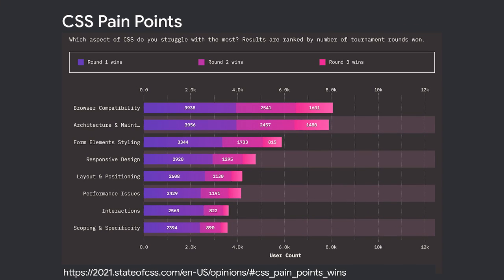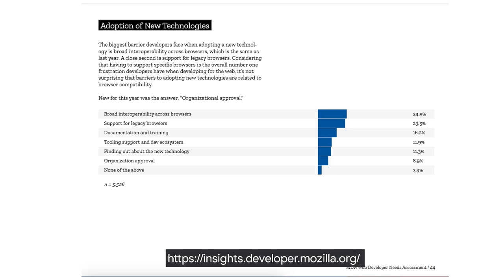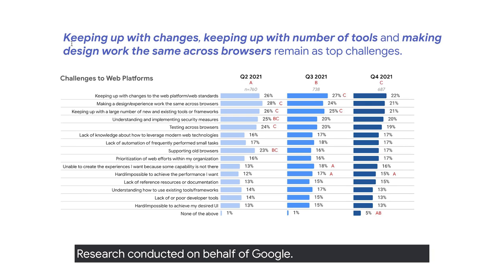When we talk to developers informally or via surveys, we hear the same thing over and over again. Making websites work well across browsers is hard. Knowing when it's safe to use new features is hard. This slide shows the results of the 2021 State of CSS survey, with browser compatibility top of the list. Interoperability, meaning the support of features across browsers, was also cited as the biggest barrier to adopting technology in the Mozilla DNA report. And in research conducted by Google, making a design or experience work the same across browsers is consistently listed as a top challenge for web developers.